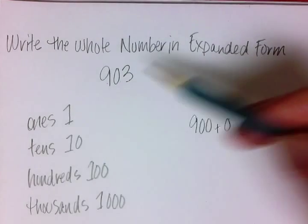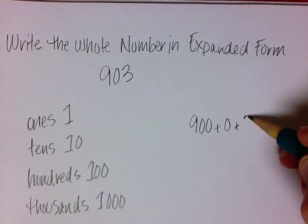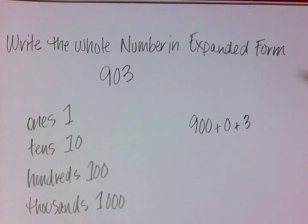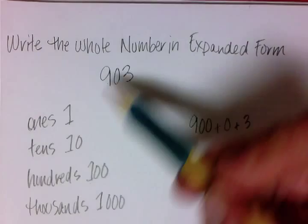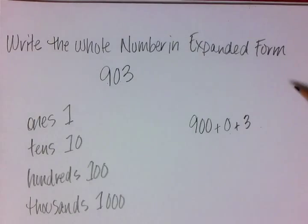Then in the ones place, we have a three. So we could do a three there. So it's 900 in the hundreds place, we have a zero in the tens place, and we have a three in the ones place.